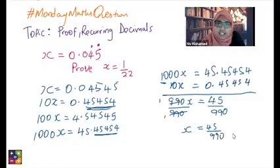If you're using a calculator, so this might come on a calculator exam, then well and good. All you do is put 45 over 990 into the calculator, which should give you 1 over 22.